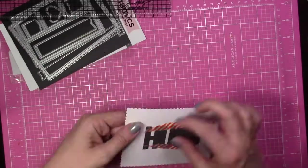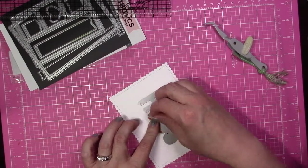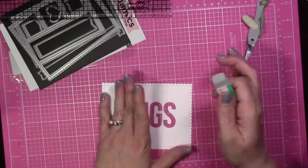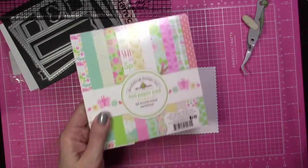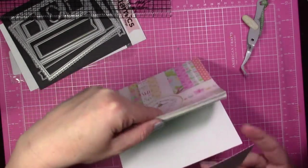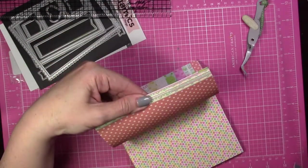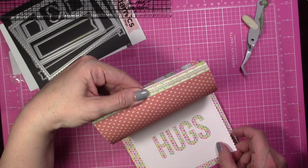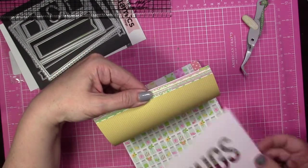I'm going to use the Doodlebug 6x6 paper pad Spring Things so that you can see it sticking out from behind the hugs sentiment. This paper has a lot of cute little springtime Easter images, so I'm just going to figure out which one works the best to stick out through the sentiment there.